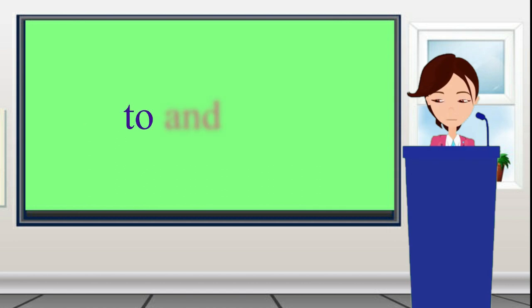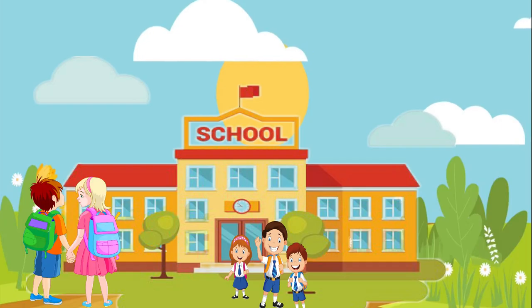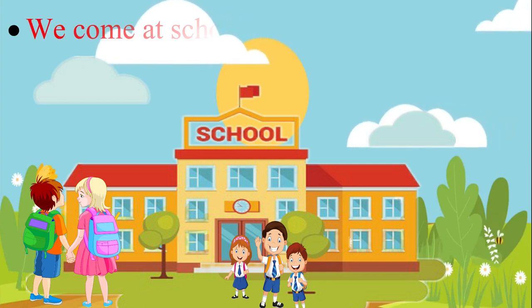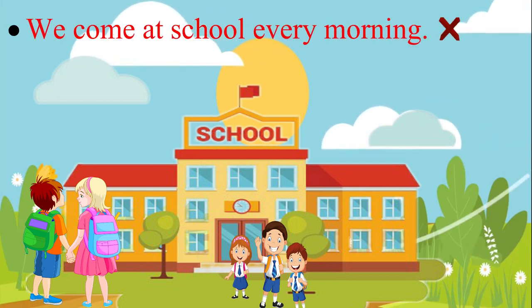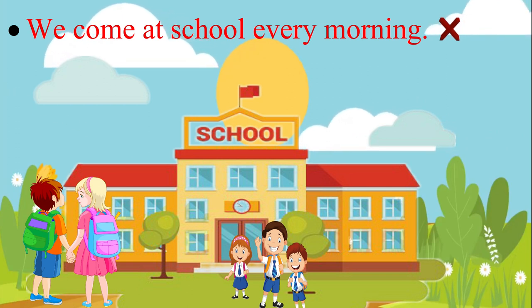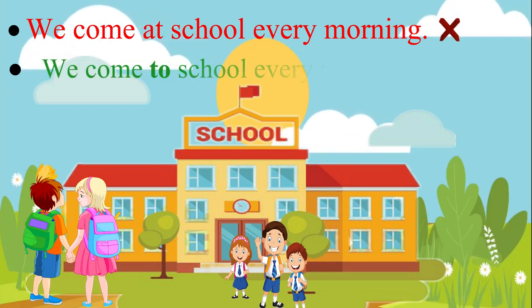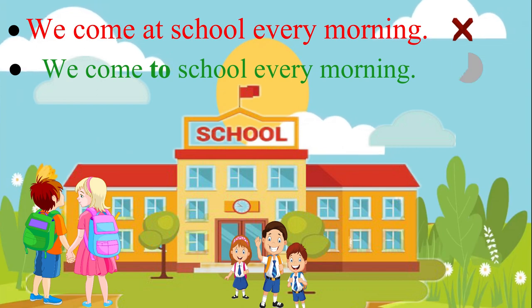TO and AT. TO is used to express motion from one place to another. It would be wrong if we say 'we come at school every morning.' The correct sentence is: we come to school every morning.